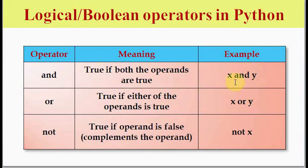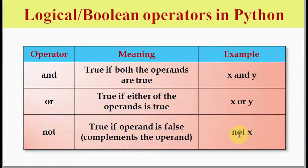For the OR operator, if either of the operands is true — if any one of x or y is true — the result is going to be true. For the NOT operator, it is the complement of the operand: if x is true, NOT x returns false; if x is false, NOT x returns true.